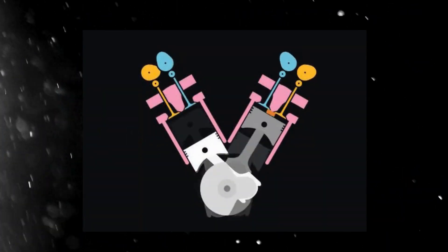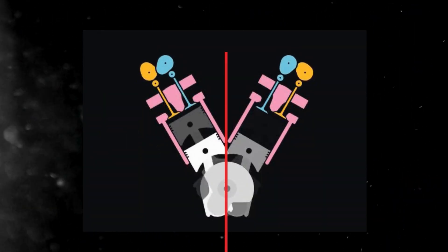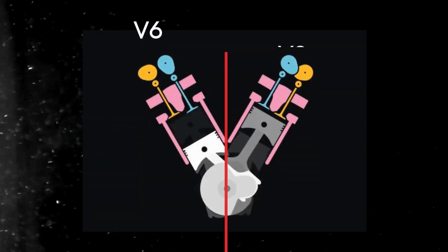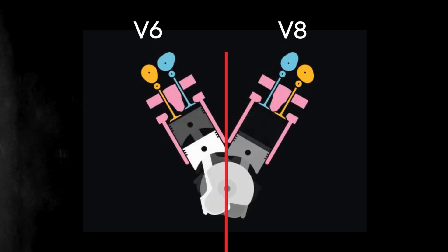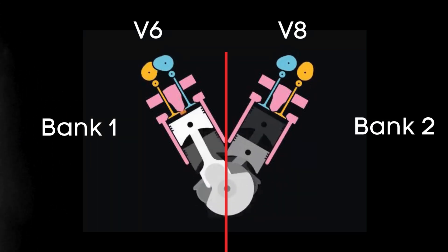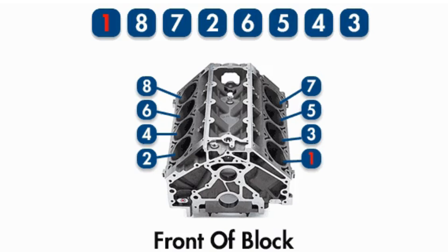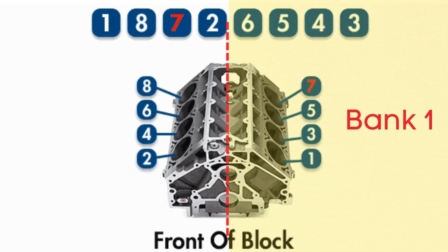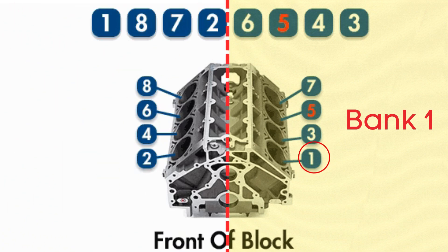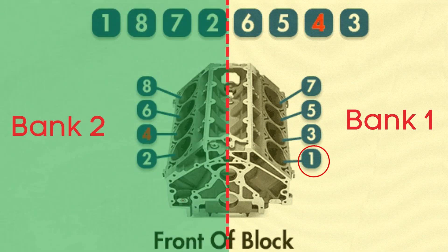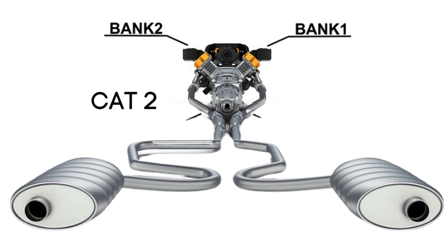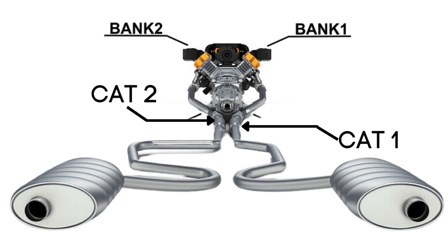In engines with multiple cylinder banks like V6 or V8 engines, you'll have two sides or banks of cylinders. Bank 1 typically refers to the side of the engine where cylinder 1 is located, and bank 2 is on the opposite side. Each bank has its own exhaust line, and each exhaust line is equipped with two catalytic converters.